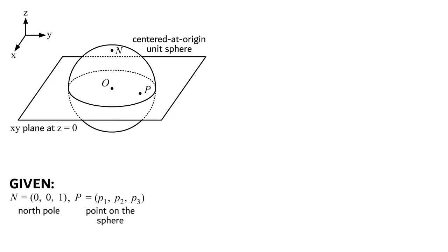We're now going to let the point p equal some arbitrary point on the sphere defined by Cartesian coordinates p1, p2, and p3. This point is not inside of the sphere; it's just some arbitrary point on the sphere whose distance from the origin is 1 unit. From the distance formula in R3, this implies that the sum of the squares of p's coordinates must equal 1.